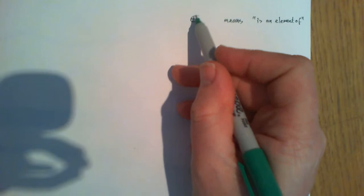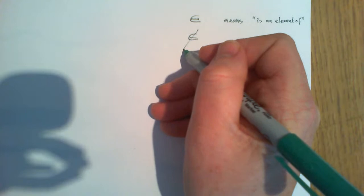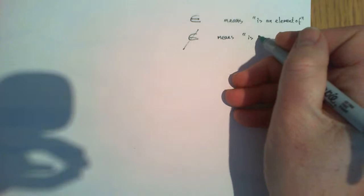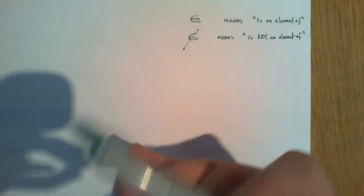Then this means 'is not an element of' - they're virtually the same except one has a line through it to denote it's the negative version. Before we go on, we're going to talk about one very important set that exists: the null set.